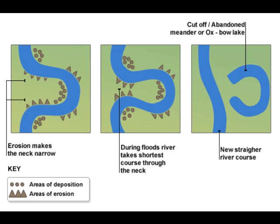Erosion causes the outside bends to get closer, mainly by hydraulic action and abrasion, until there is only a small bit of land left between the bends, called the neck. The river breaks through the land, usually during a time of flooding, and the river always follows the shortest course. Deposition eventually cuts off the meander, forming an oxbow lake.